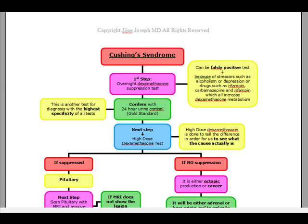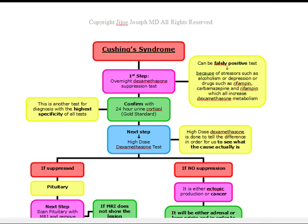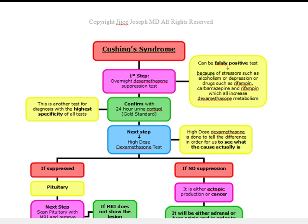Our next topic is Cushing's Syndrome. Cushing's Syndrome is a group of clinical abnormalities caused by prolonged exposure to increased amounts of cortisol or related corticosteroids.